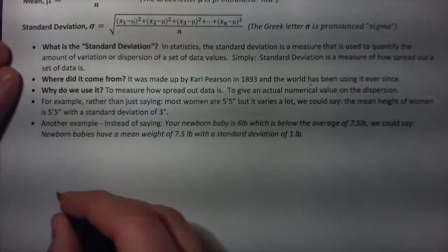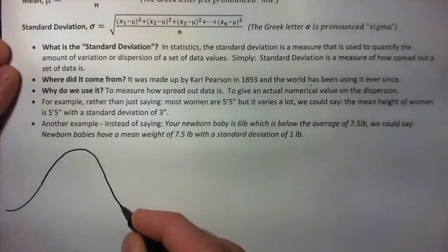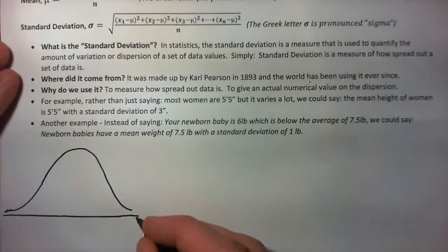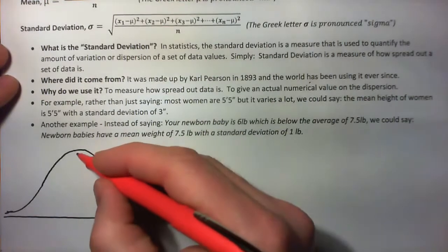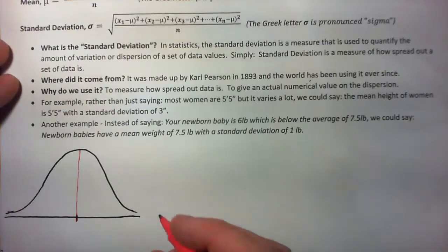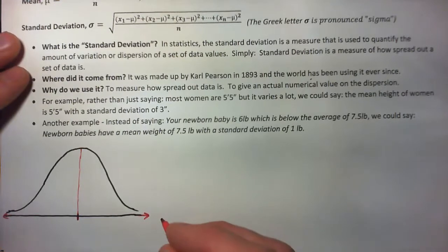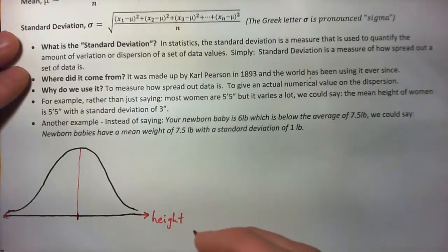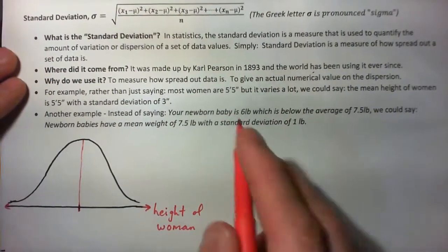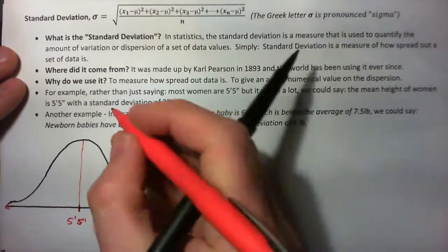If you take the heights of women, that's kind of a bell graph here. This bell graph represents a lot of things in the world — heights of men, heights of women, heights of trees, weights of things. Right here in the middle would be the mean. So this is called a normal distribution. The x-axis in this case would be height — height of a particular woman. Now the mean height is 5 foot 5 inches, and the standard deviation is 3 inches.